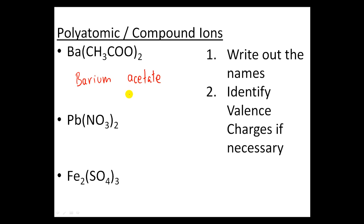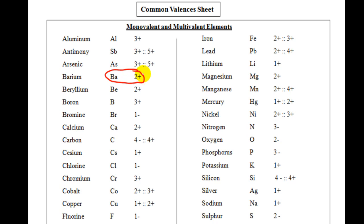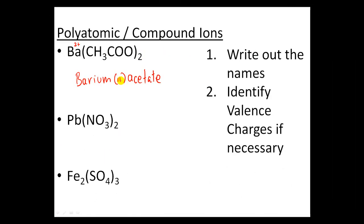A common question is: why don't we say barium II acetate, since barium has a 2+ charge? That's because barium only has one possibility — it is monovalent. If there's only one possibility, there's no need to identify its charge with a Roman numeral. If it were an element with multiple valence options, then yes, you would need a Roman numeral. But since barium only has one possibility, the Roman numeral is not necessary.